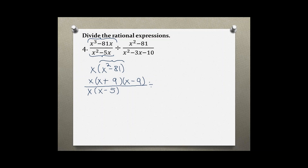Now factoring the top of the second fraction. This is the difference of two perfect squares like in the previous example. So we can write x plus 9 and x minus 9.